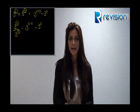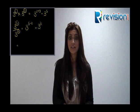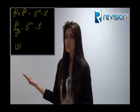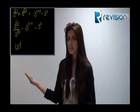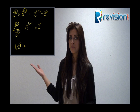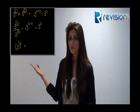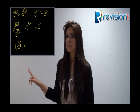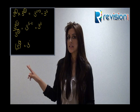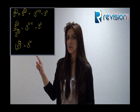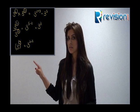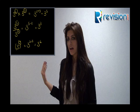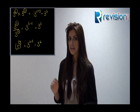Next, bracket multiplication of indices. 3 squared to the power of 3 means that we have to multiply the two indices. So 2 times 3 is 6, and we have 3 to the power of 6.